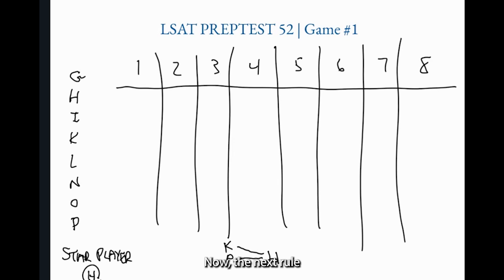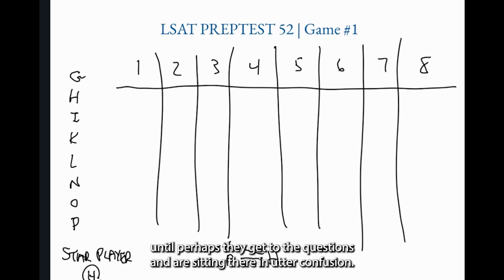Now the next rule mentions H again and on this rule I like to add another very important principle of success on logic games and that is to slow down. Paradoxically even though the clock is running and you feel rushed that you need to speed up you actually need to do precisely the opposite as you're going through the rules. I cannot tell you how often I see a student's entire logic games project on a particular game undone and ruined where they have to start over after five minutes or more because they've misread a rule and failed to discover it until perhaps they get to the questions and are sitting there in utter confusion.